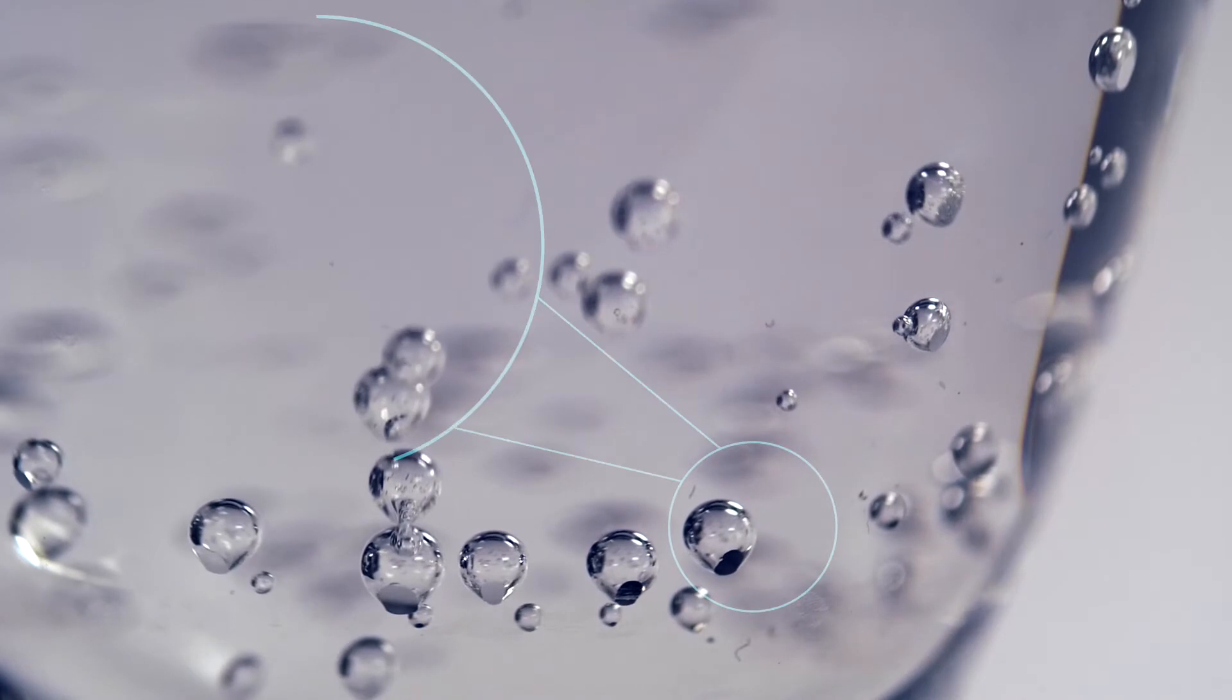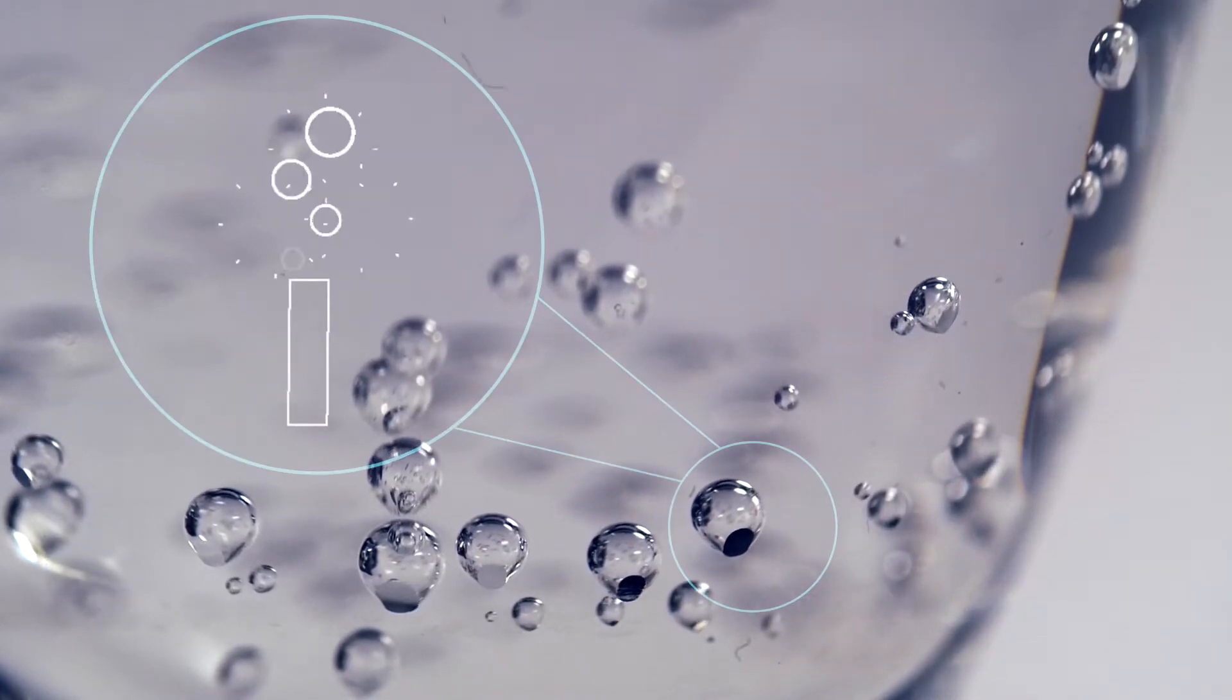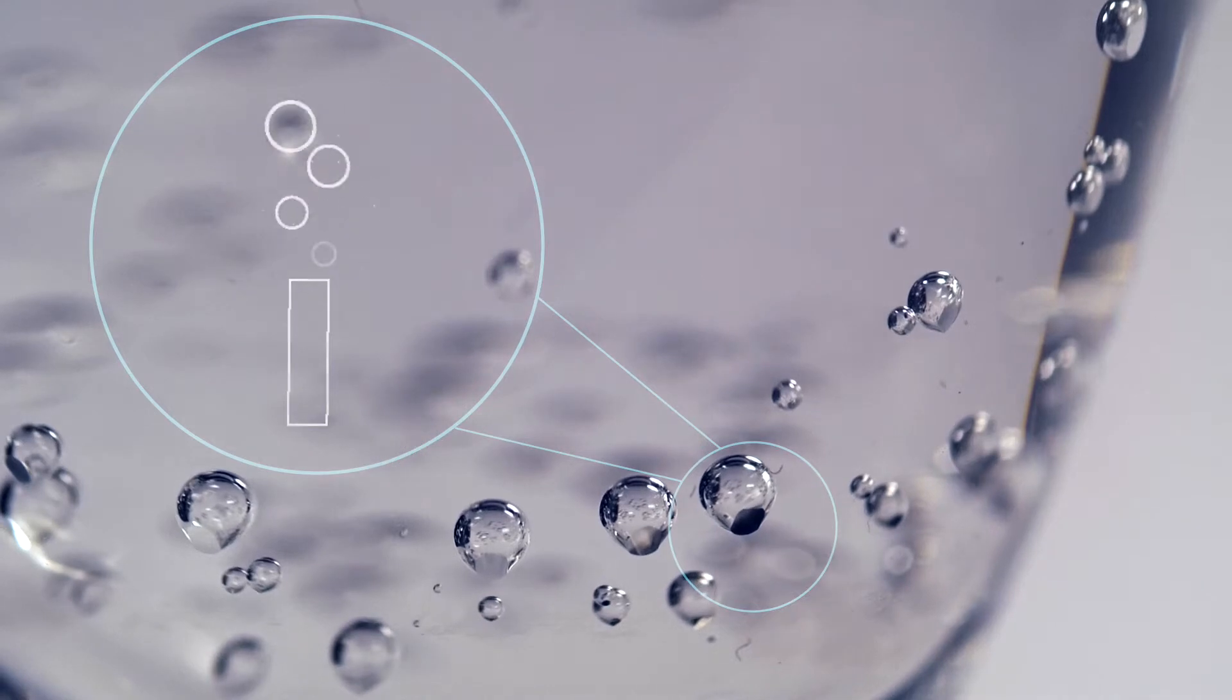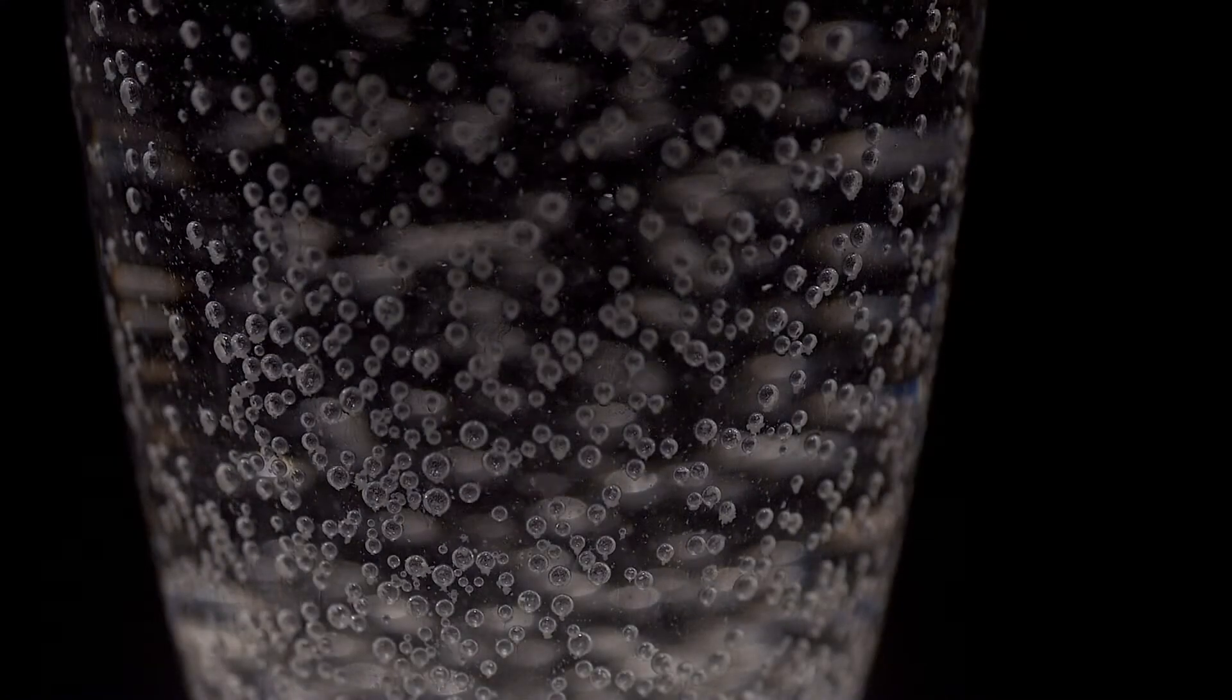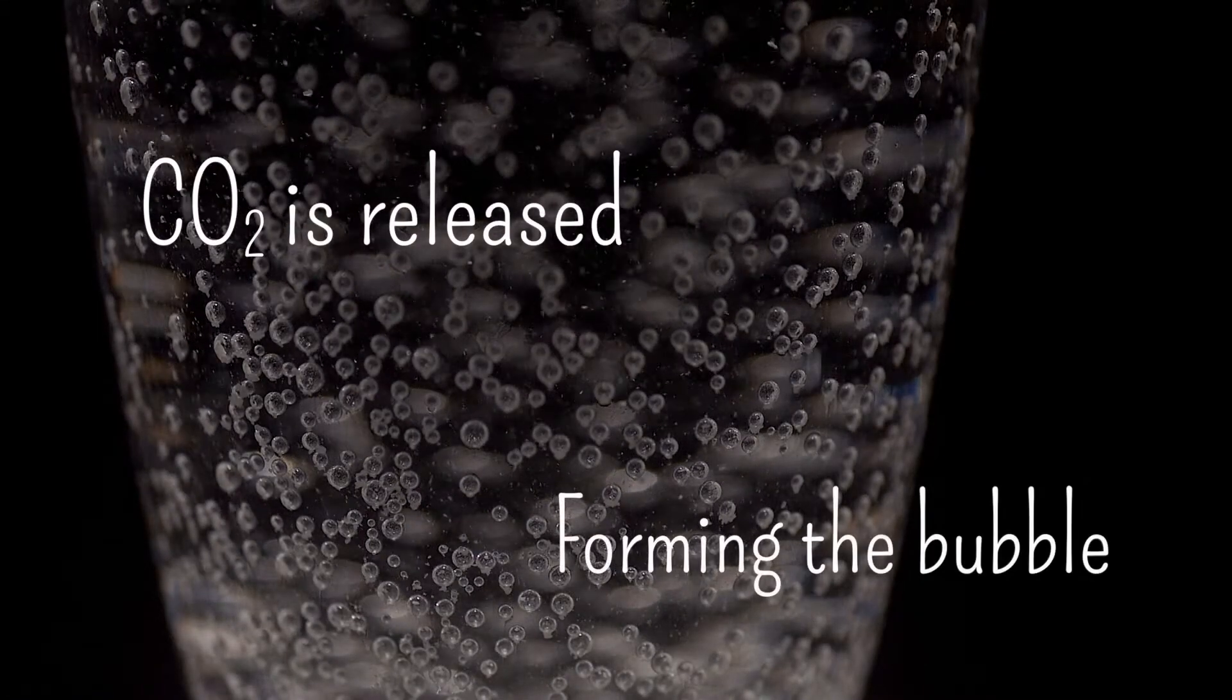Bubbles appear from microscopic cracks or fibers in the glass. Each crack, called a nucleation site, traps a small pocket of gas. When the gas is released, it forms a bubble.